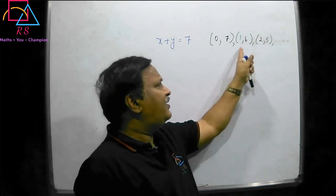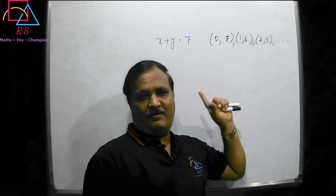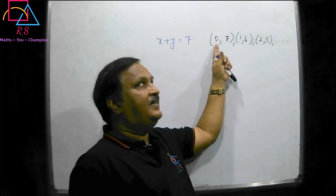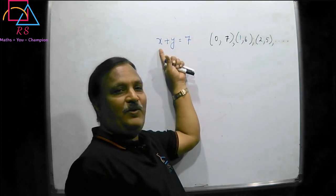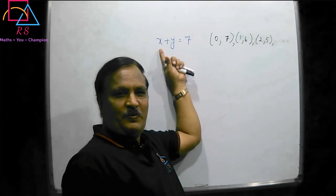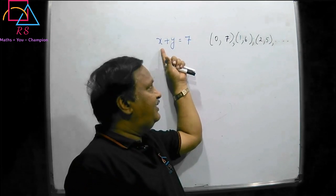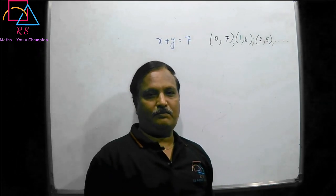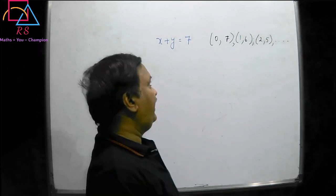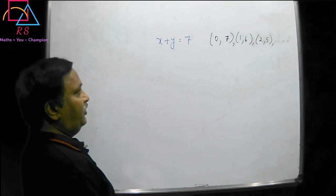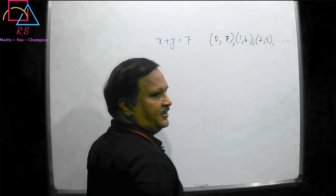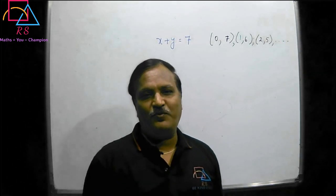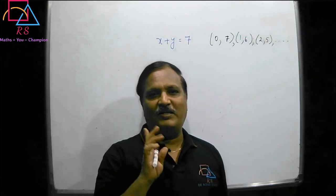Why is it called an ordered pair? Because always in all these pairs, the first one is the x value and the second is the y value. So there are infinitely many solutions, but sometimes we need only one solution.